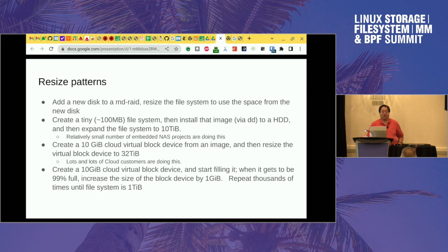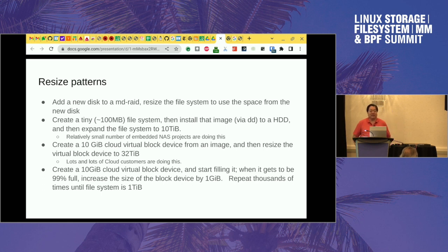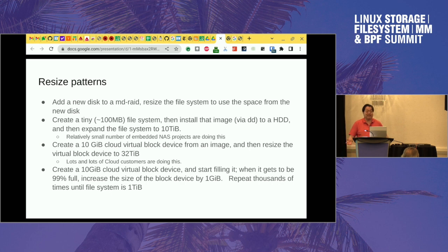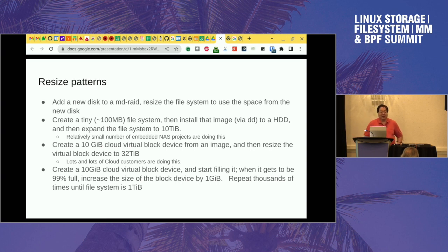Many of these cloud customers are fairly naive, so they use the default MakeFS options, which historically in Linux have used different file system parameters depending on the device size — a smaller journal and different inode size for a USB thumb drive versus a 10-terabyte hard drive. That makes sense if you're actually putting it on a USB thumb drive, but if that thumb drive suddenly becomes a dozen terabytes, the file system parameters might not be good for that.